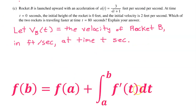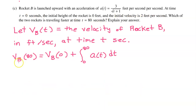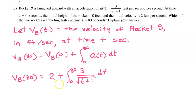Using the first fundamental theorem of calculus with acceleration as our rate — since acceleration is the derivative of velocity — velocity at B equals velocity at A plus the integral of acceleration from A to B. We need velocity at T equals 80, and the initial velocity at T equals 0 is 2 feet per second. So VB(80) equals 2 plus the integral from 0 to 80 of 3 over the square root of T plus 1 dt. All we need to do is evaluate this integral.